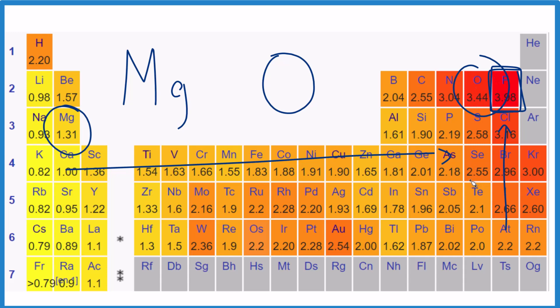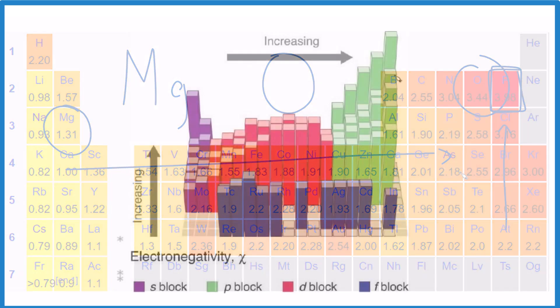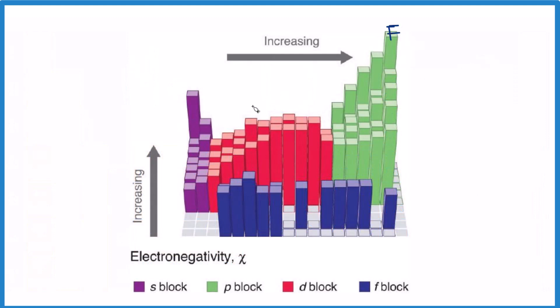Another way we can visualize this is in three dimensions. So right here would be fluorine, and then magnesium, that's right here. This is magnesium.